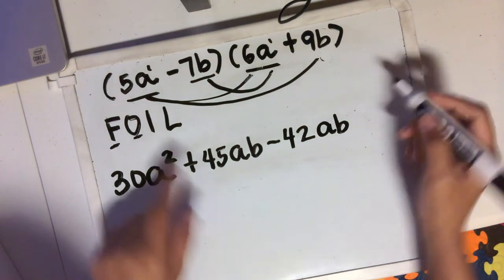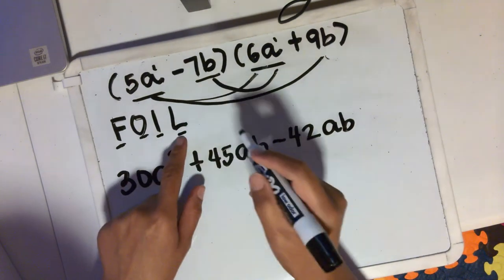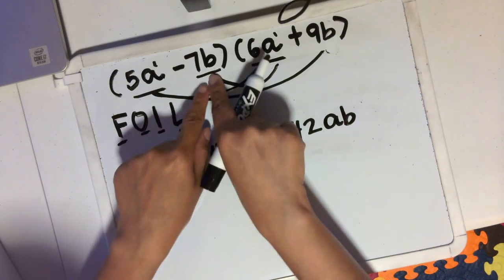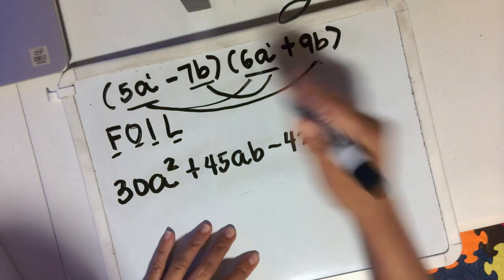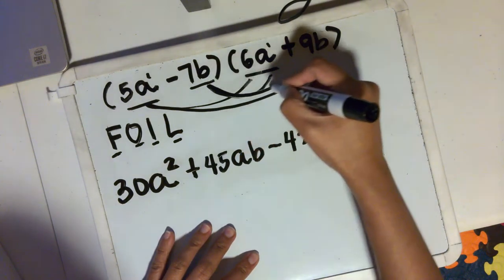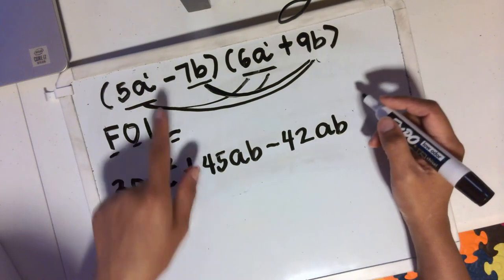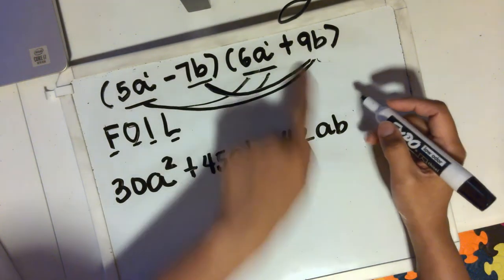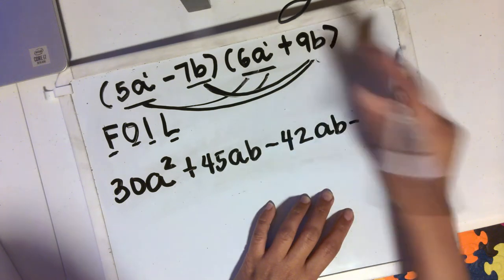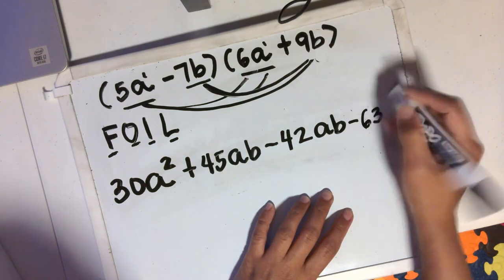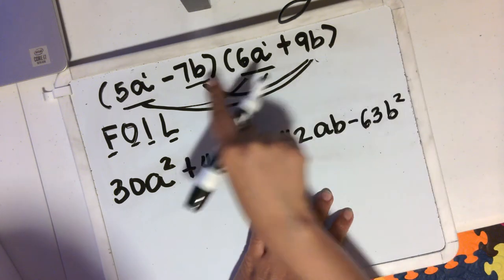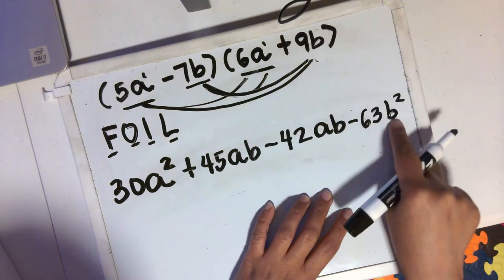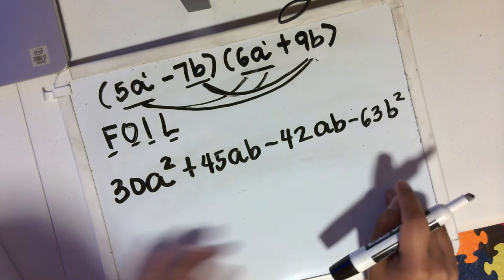And then last term times last term. So the last term of the first binomial multiplied by the last term of the second binomial. So we'll have -7b times 9b. Negative times positive is negative. 7 times 9 is 63. b times b is b squared because we are adding their exponents since they have the common base. You copy the common base and add exponents.